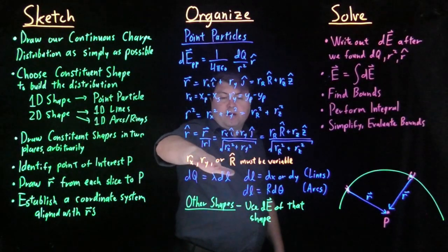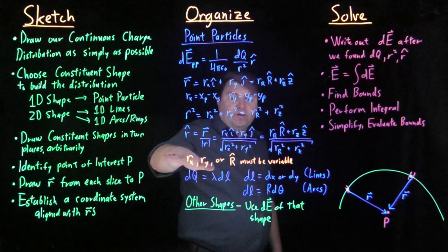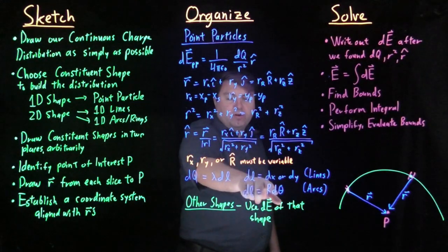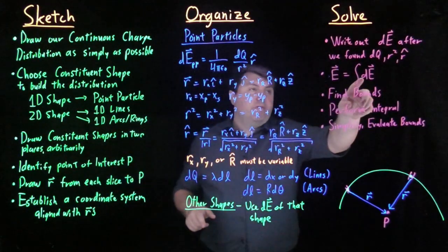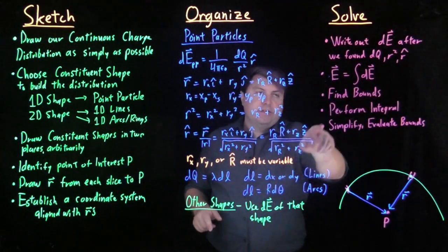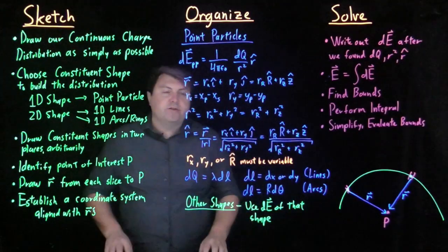This is how we approach continuous charge distributions. This r_x, r_y, or r is going to be a variable. It's going to have the same variable as this dx, dy, or d theta. And this is a good check for that. Then we're going to integrate over the same thing that our dl is going to be part of.